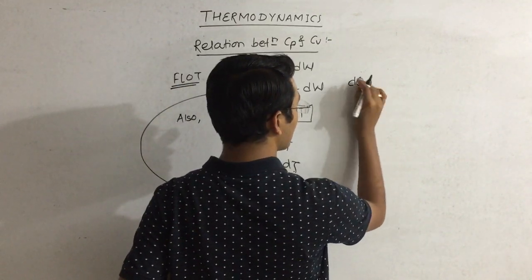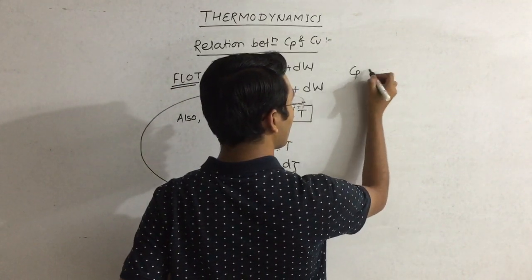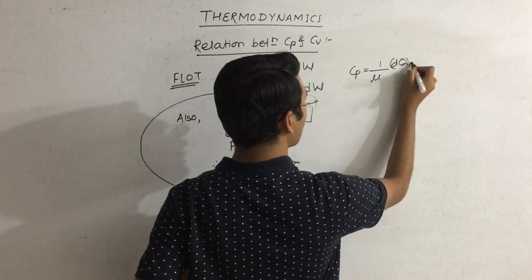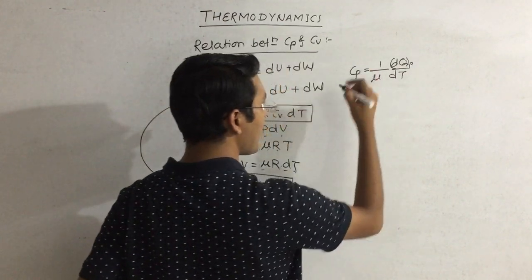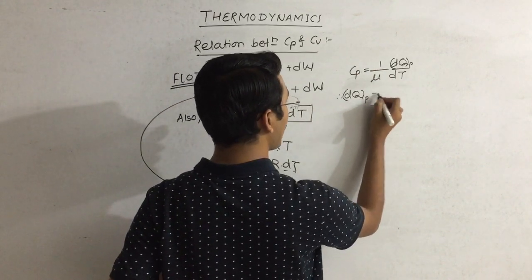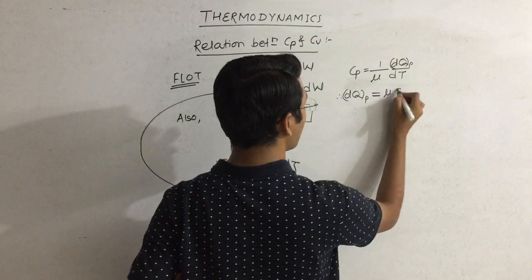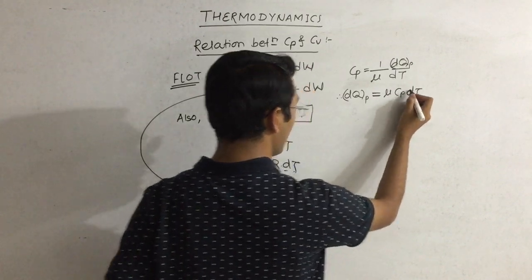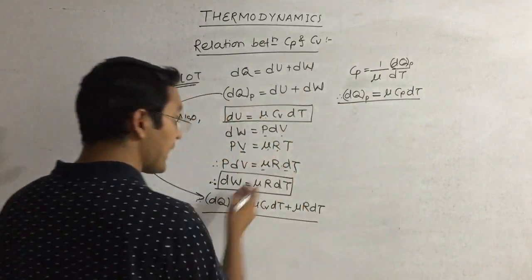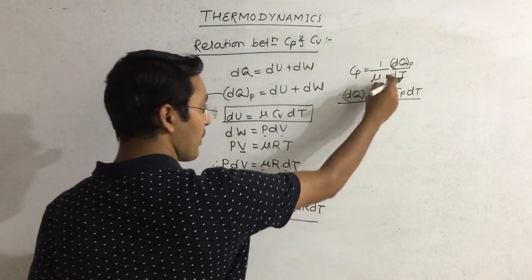We studied in the molar specific heat lecture that Cp is equal to 1 upon n times dqp by dT. Therefore, from here the equation for dqp becomes n Cp dT. These two equations have equal left hand sides, so their right hand sides must also be equal.